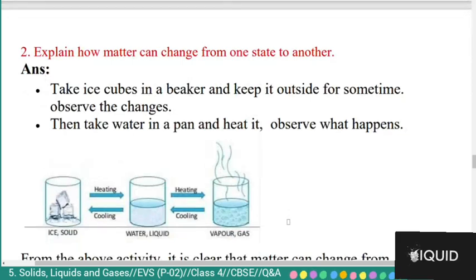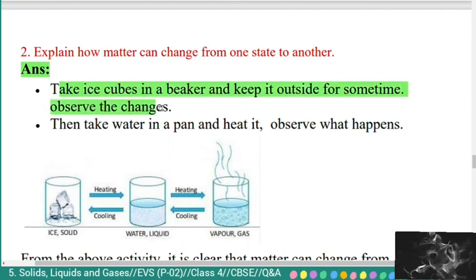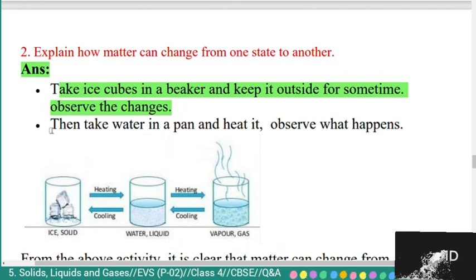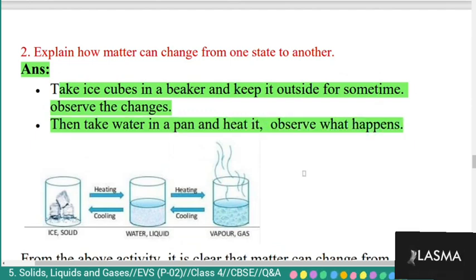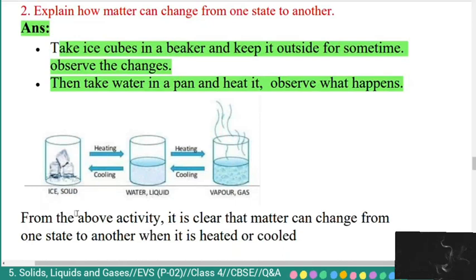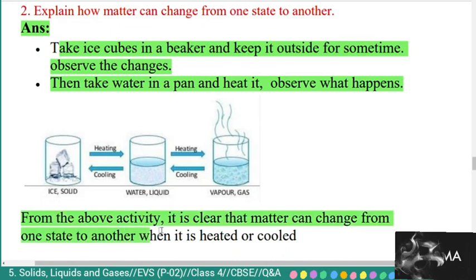Question 2: explain how matter can change from one state to another. Answer: take ice cubes in a beaker and keep it outside for some time — observe the changes. Then take water in a pan and heat it — observe what happens. The ice changes into liquid. From this activity it is clear that matter can change from one state to another when it is heated or cooled.